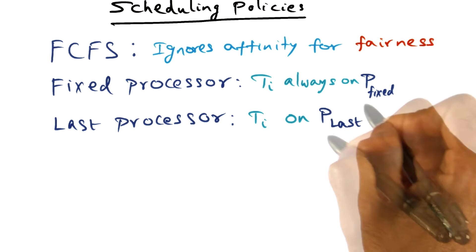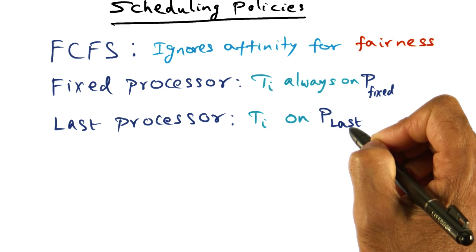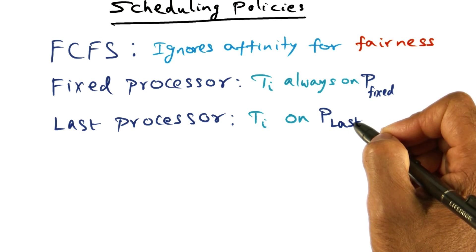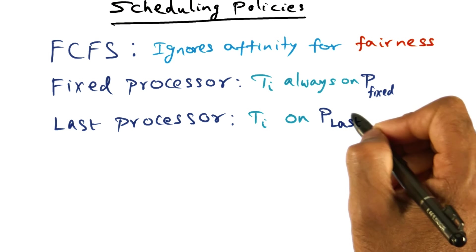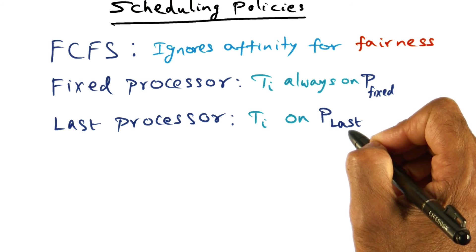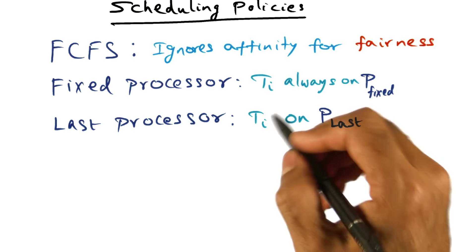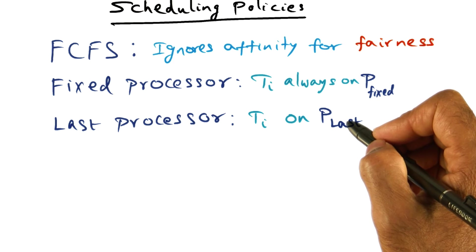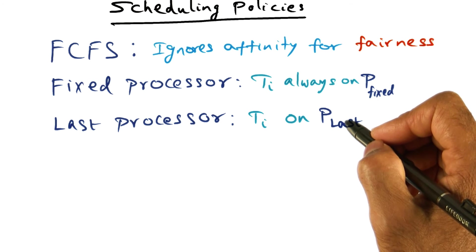Of course, when a processor is looking for work and it looks at the run queue, does not find any thread that used to run on it, then of course it has to pick some thread. The inclination is to pick the thread that had run on this processor before. But if such a thread is not available, then you're going to pick something else.